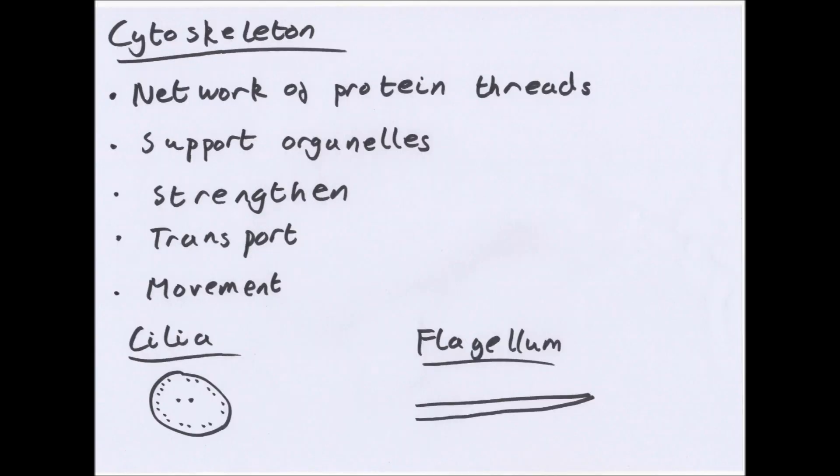A cytoskeleton. This is a network of protein threads. Now this can be things called microtubules. These are cylinders about 25 nanometers made of tubulin.